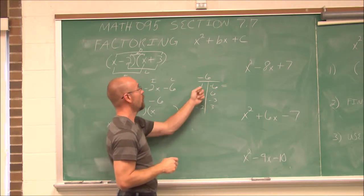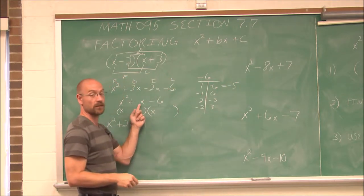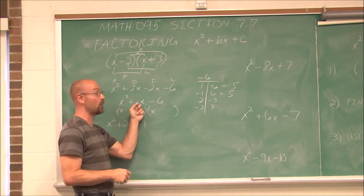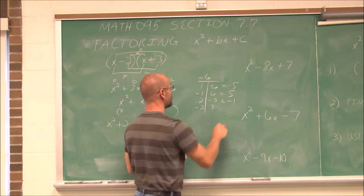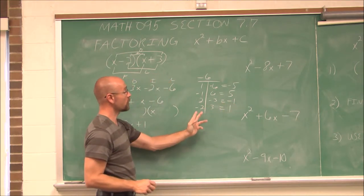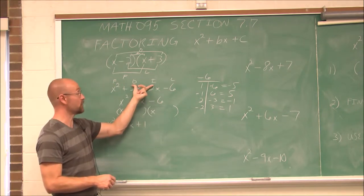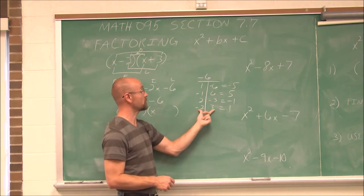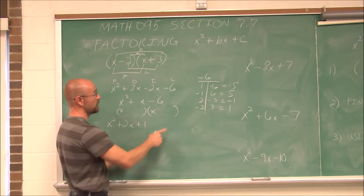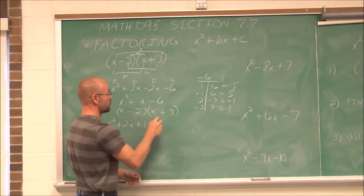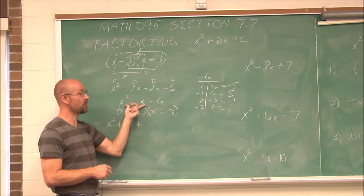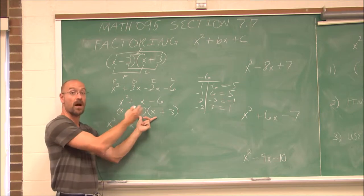Finding their sums: 1 and negative 6 gives negative 5 — not positive 1. Negative 1 and 6 gives positive 5 — still not 1. 2 minus 3 gives negative 1. But negative 2 plus 3 is positive 1 — that's it. So the factors of the last term that combine to give positive 1 are negative 2 and 3. Negative 2 times 3 is negative 6, and negative 2 plus 3 equals 1. So x minus 2 times x plus 3 is exactly what we started with. We can work a trinomial backwards into its product of binomials.